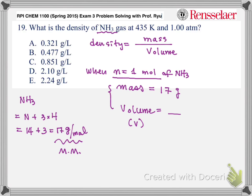What about the volume? Volume is nRT over P. In this case, pressure is 1 atm, R is 0.082, and temperature in terms of Kelvin was nicely given as 435 Kelvin. So when you calculate that, you will have 35.7 liter.